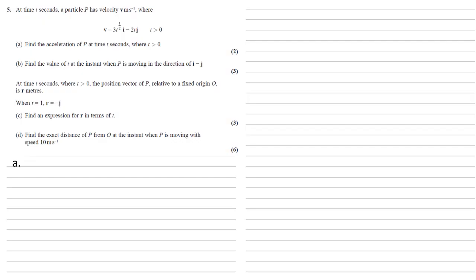At time t seconds, a particle p has velocity v meters per second, where v equals 3t to the power of a half i minus 2t j.